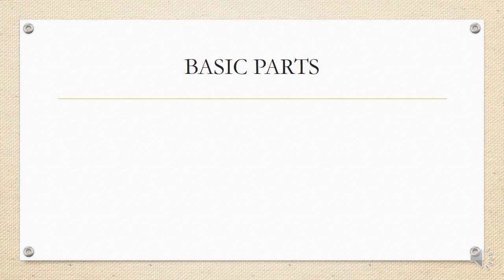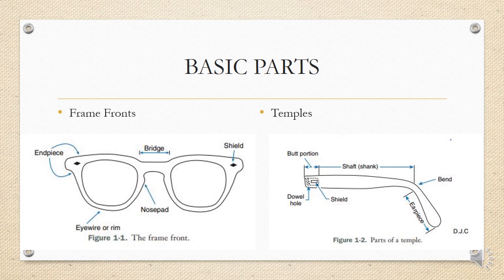A frame can be divided into two basic parts: the frame front and the temple. The frame front is the part which holds the actual ophthalmic lenses in place, whereas the temple is the part which connects the frame front and places it properly with the support of your ears.